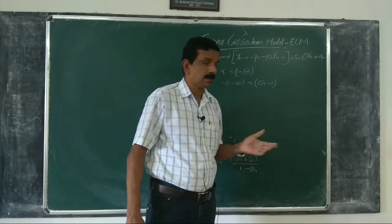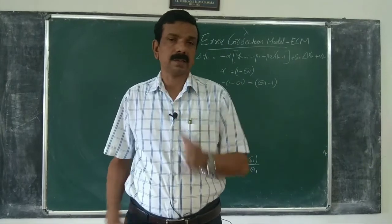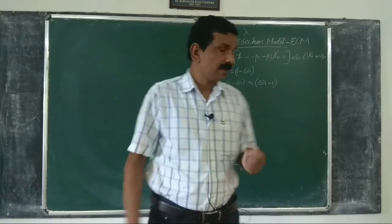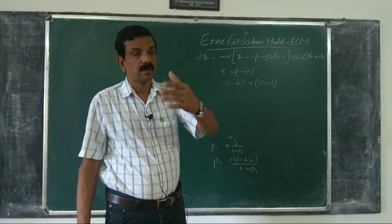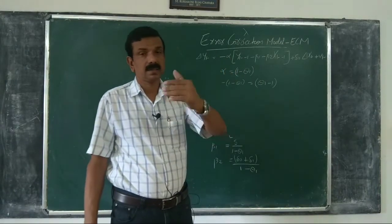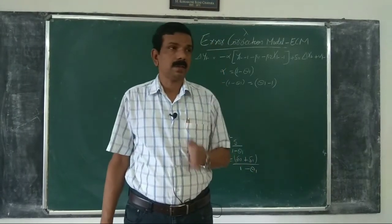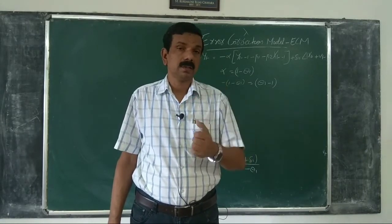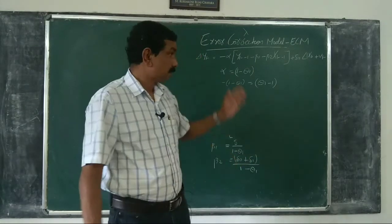So if we estimate a single equation, we do not simply regress Y on X. Instead, we estimate an ECM. The ECM gives us beta_1 and beta_2 — the parameters defining the long-run relationship between Y and X — and also the extent of correction in the error from the previous period. This model incorporates both the long-run relationship between Y and X and also the short-run dynamics.